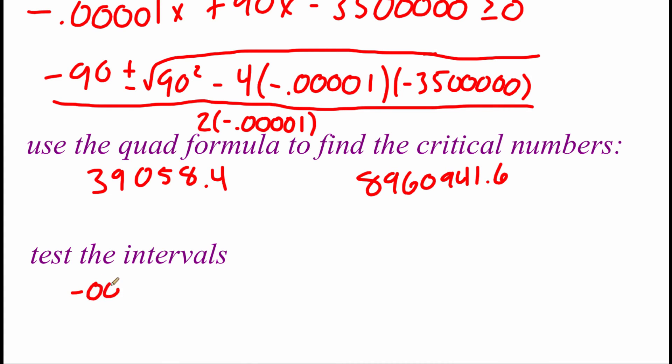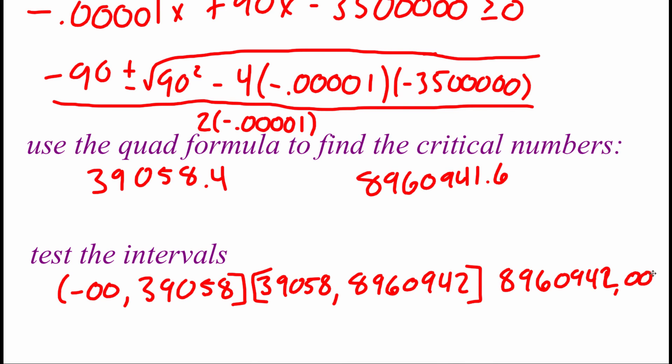So setting up my intervals, I'm going to go from negative infinity until I hit that first critical number at 39,058. This is going to be included. Then we go from the 39,058, again, included, until we hit our next critical number, which is at 8,960,942, if we round this one up, included. And then we go from that last critical value until we hit infinity.